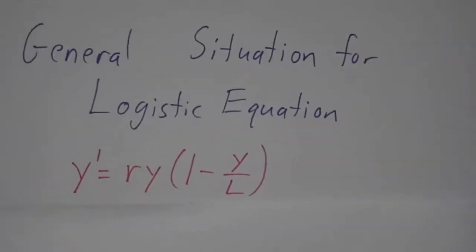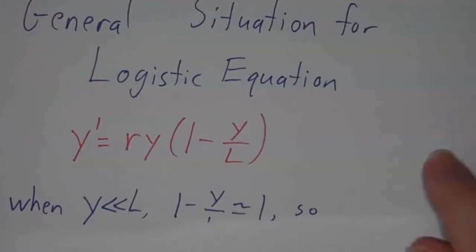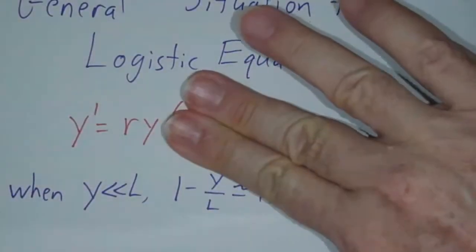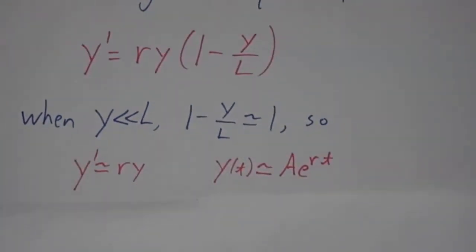Now, this happens for every logistic equation, not just humans versus zombies. Whenever you have the equation y' = ry(1 - y/L), where L and R are constants, whenever y is very small compared to L, 1 - y/L is close to 1. So this is approximately y' = ry. That's exponential growth. So in the early stages, the number grows exponentially.